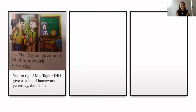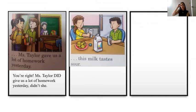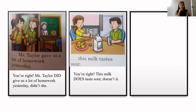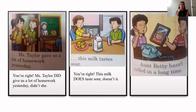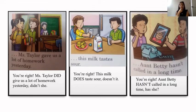Try to do the next two without help. 'This milk tastes sour.' Response: 'You're right. This milk does taste sour, doesn't it?' And: 'Aunt Betty hasn't called in a long time.' Response: 'You're right. Aunt Betty hasn't called in a long time, has she?'